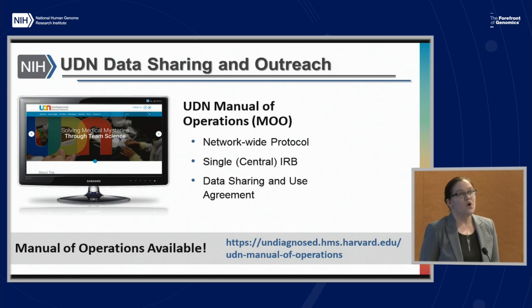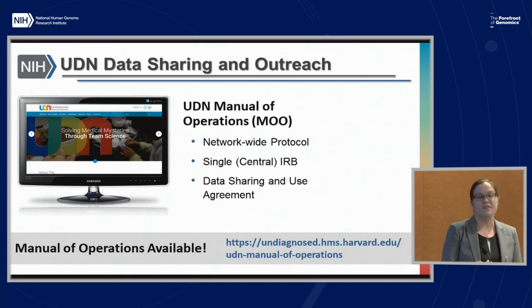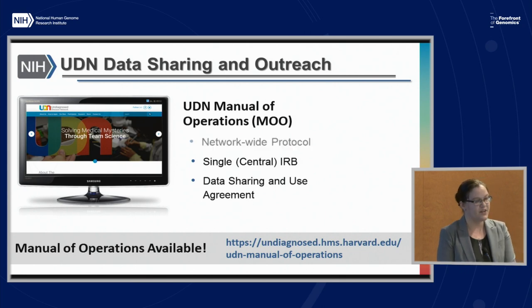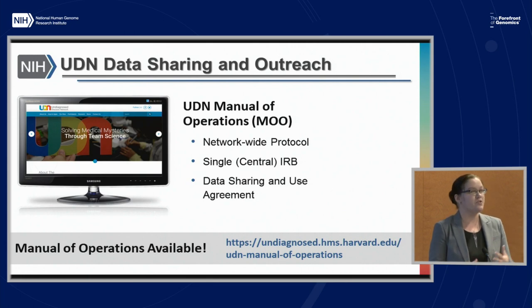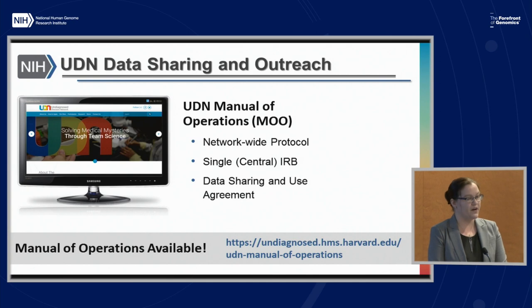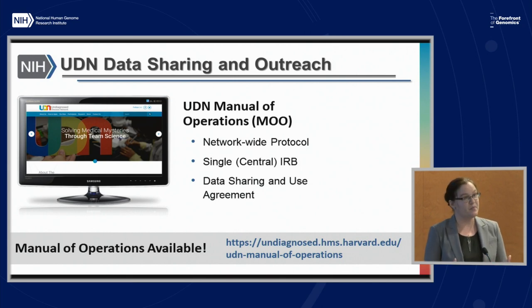The UDN does a lot of work developing this community and ensuring information is broadly available. We have a Manual of Operations — about a 200-page document — outlining the entire network-wide protocol, all evaluation components, and logistical factors. The UDN operates with a single IRB located at the NHGRI IRB at the NIH, predating NIH's single IRB policy. All sites, not just clinical groups, sign reliance agreements to be part of the single IRB.